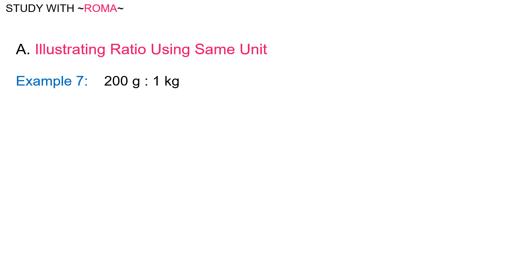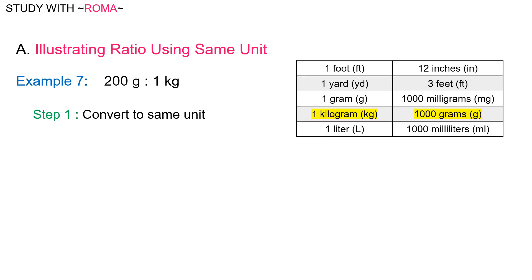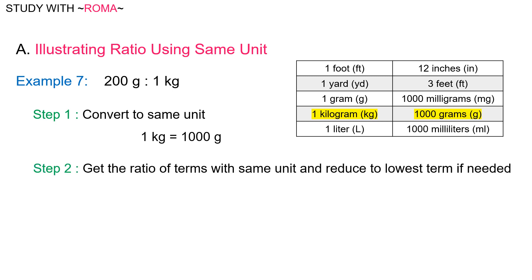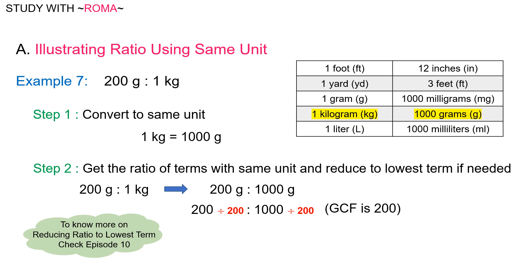Lastly, this is using units of mass. Example number 7: 200 grams is to 1 kilogram. Step 1: convert to the same unit using the conversion table. Find kilogram to grams. 1 kilogram is equal to 1,000 grams. Step 2: get the ratio of terms with the same unit and reduce to lowest term if needed. 200 grams is to 1 kilogram will be 200 grams is to 1,000 grams. Divide both sides by 200: 200 divided by 200 is to 1,000 divided by 200, which is equal to 1 is to 5.